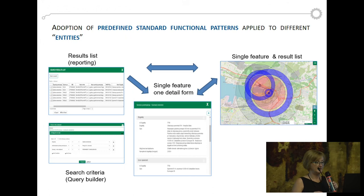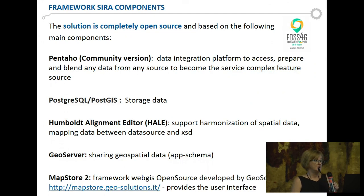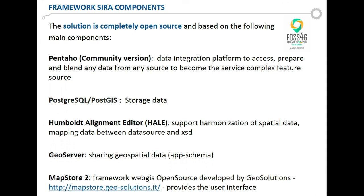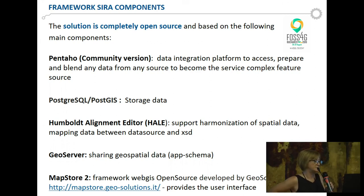It's a circular way to work: I can reuse the query builder, or click on a position on the map, see the feature list, and enter the detail form. The solution is completely open source. We use Pentaho and Postgres for data storage. We use the Humboldt Alignment Editor (HALE) to support the mapping between data sources and the application schema. We use GeoServer for sharing geospatial data, and the GeoServer app-schema extension to publish WFS 2.0. We use the MapStore2 WebGIS framework, developed by GeoSolution, to provide the user interface.